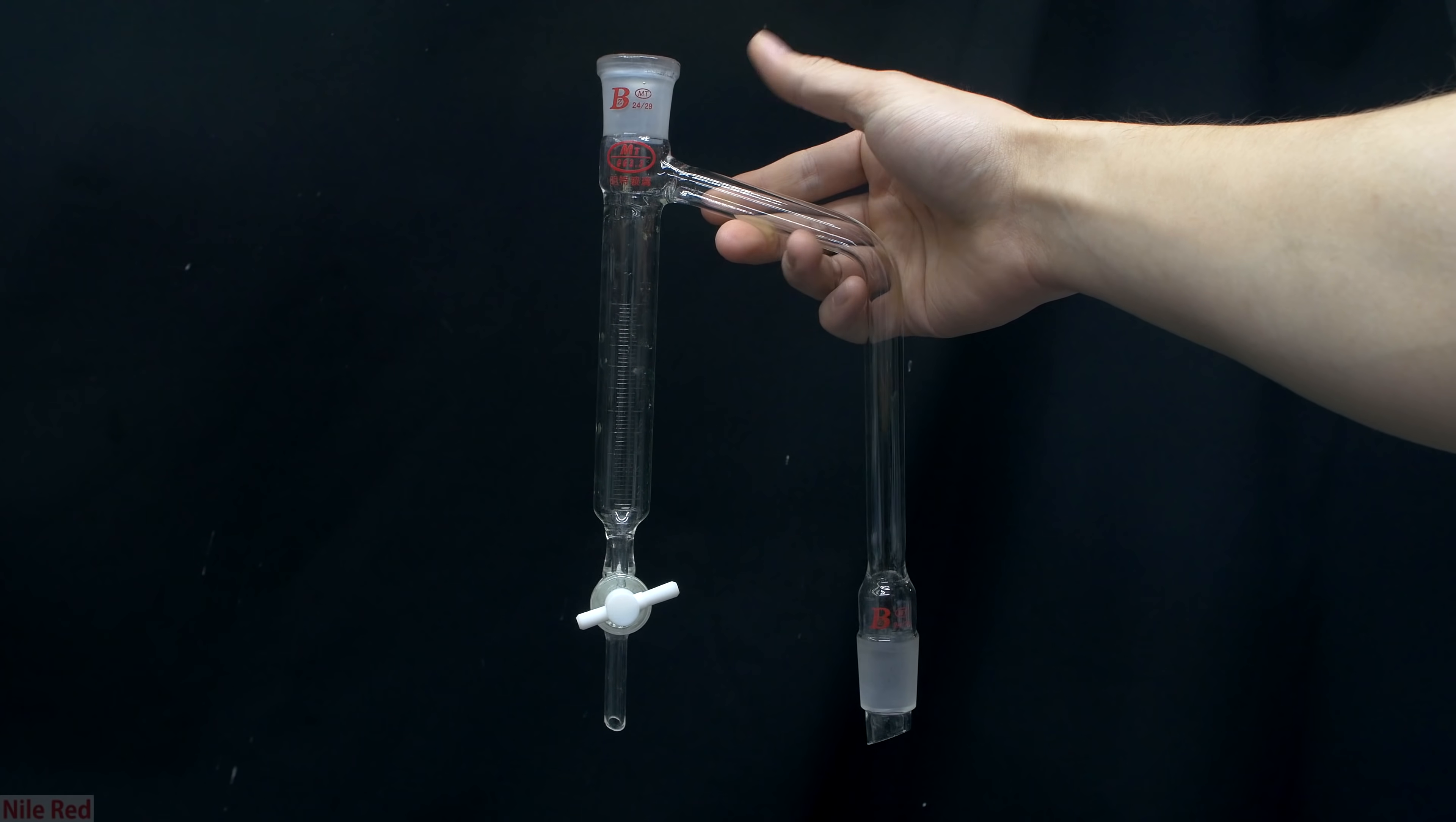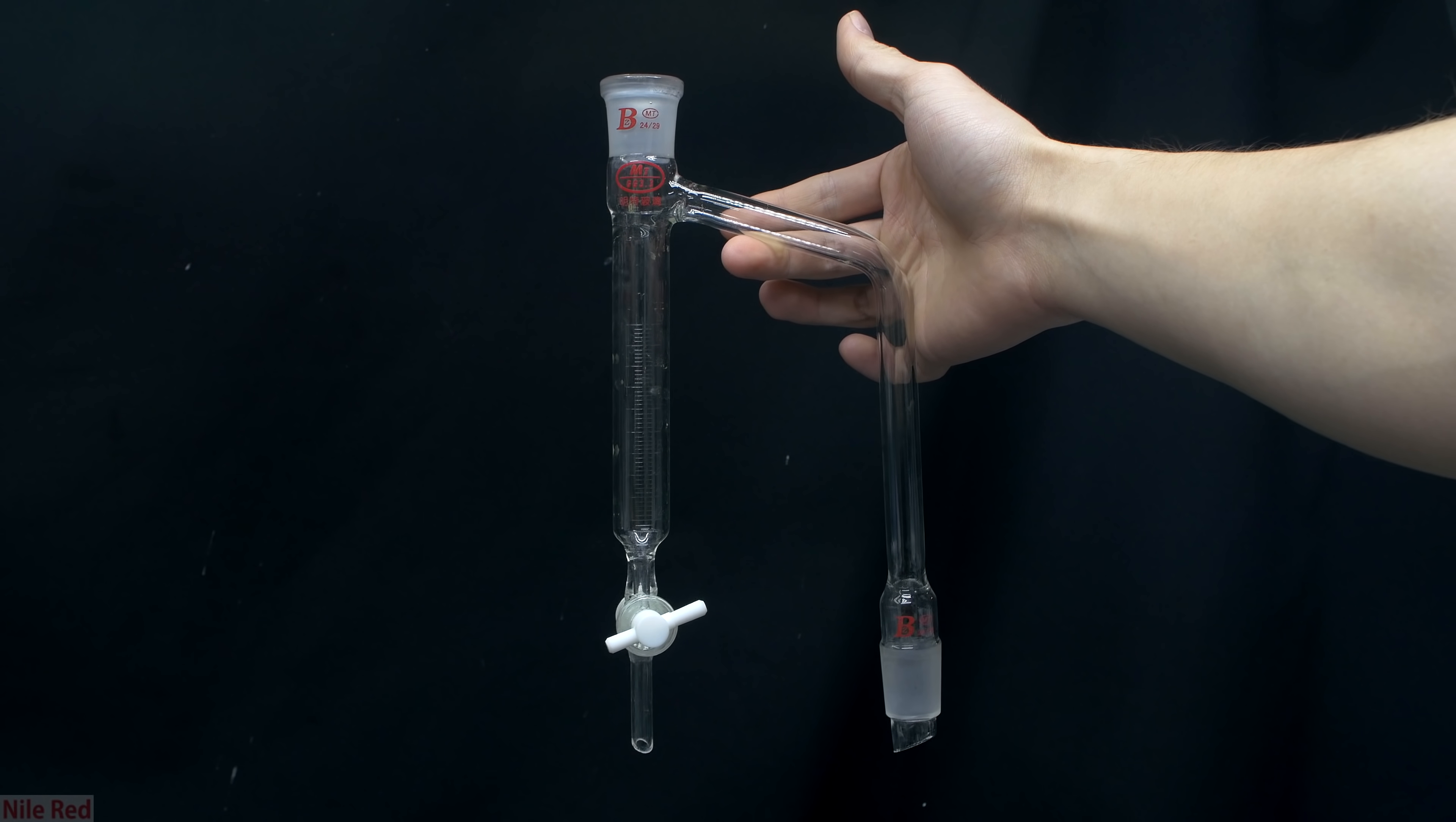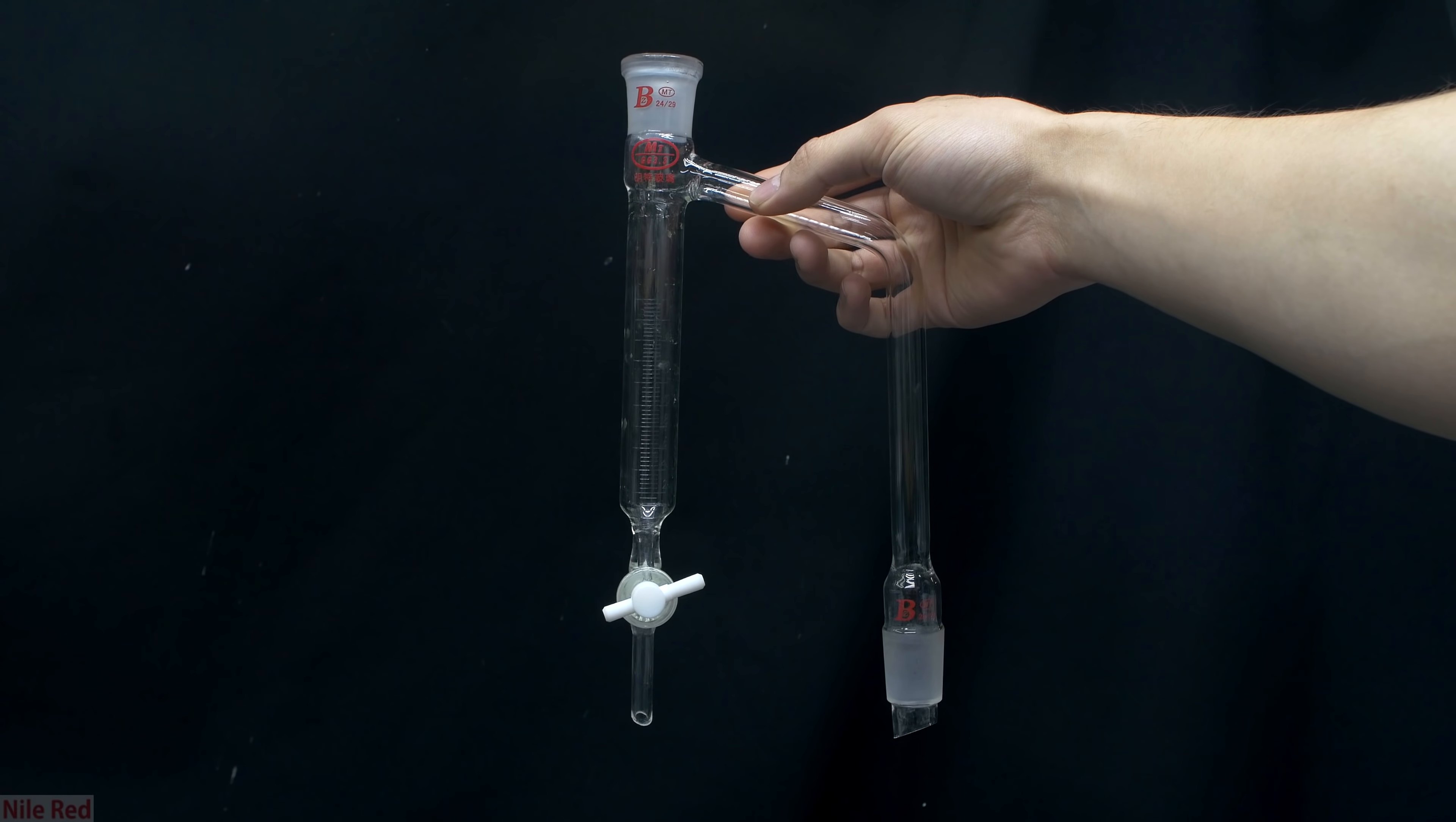So this is what a Dean-Stark apparatus looks like. On the right side, we attach it to the flask, and on the left side, above it, we'll have our condenser. As we continue with the video, you'll see exactly how this nifty piece of glassware works and why it's so useful.